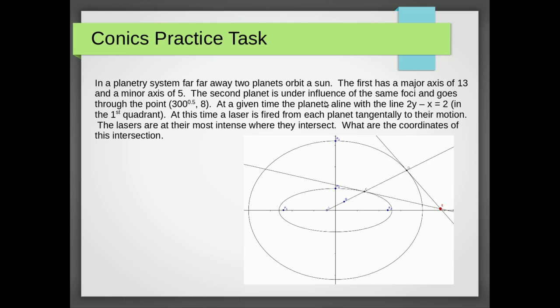The second planet is under the influence of the same foci—these points here we don't know what those are yet—and goes through the point (√300, 8), which would be somewhere over here. At a given time, the planets align with the line 2y - x = 2, which is this line here.